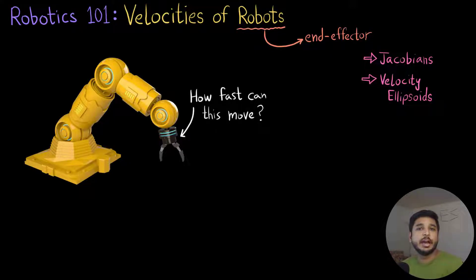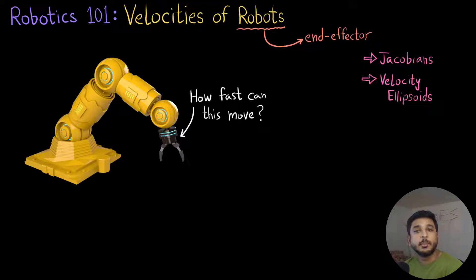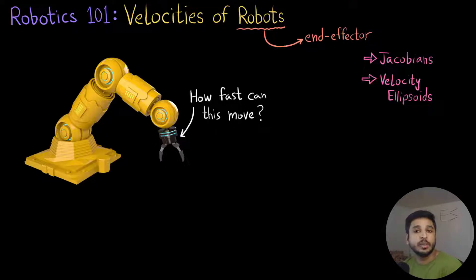Hi everyone, I am Zain Khan, welcome back to another video in the series Robotics 101. In this video we are going to talk about the velocities of robots, more specifically the velocity of the end effector of a robot. In doing so we are also going to learn about the Jacobians and something called velocity ellipsoids.